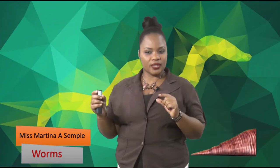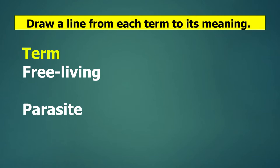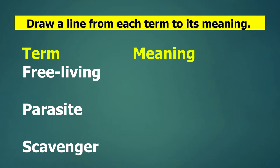Question 4: draw a table with two headings — 'Term' and 'Meaning.' Under 'Term,' write: free living, parasite, and scavenger. Now we're going to match the term with their meaning. I will not call them in the correct order, so use your pencil and ruler to match them correctly.